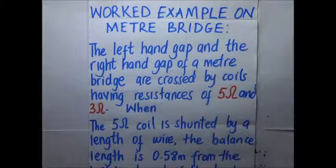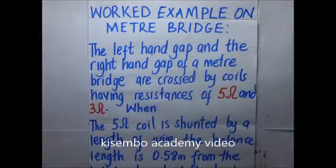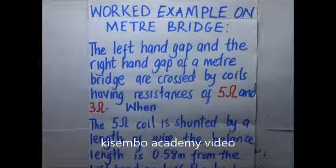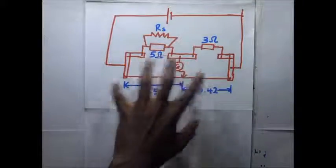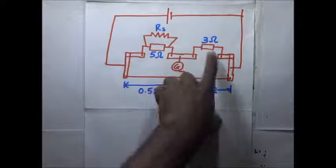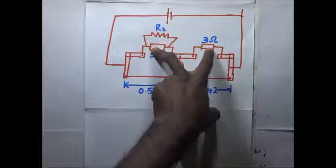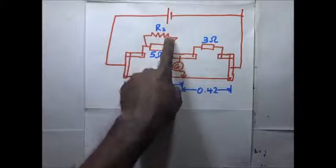The question states: the left hand gap and the right hand gap of a meter bridge are occupied by coils having resistances of 5 ohms and 3 ohms respectively. When the 5 ohm resistor is shunted by a length of wire, the balance length is 0.58 meters from the left hand end of the bridge. We are asked to find the resistance of the shunt. The left hand gap has 5 ohms shunted by a resistance Rs.